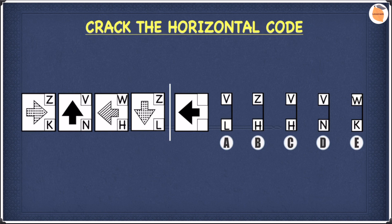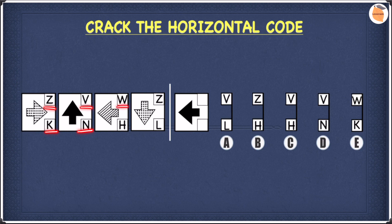Let's have a look at this question. In this example we have four shapes, each of them with their own two-letter codes, and this is the same for all of the shapes. Our job is to find what each of these letters mean, and once we've done that we'll have to use it to find the code for the shape on the right.